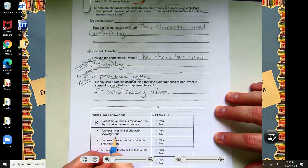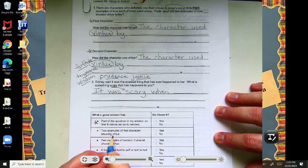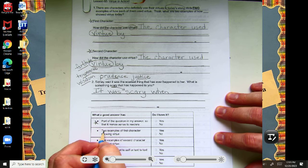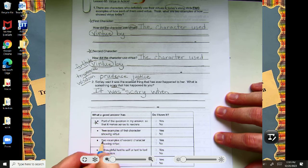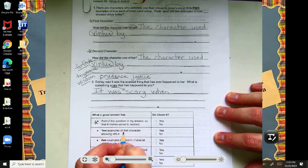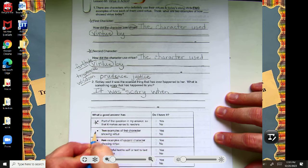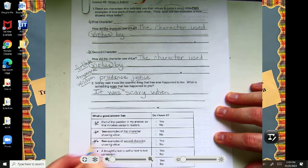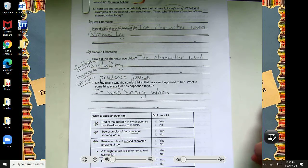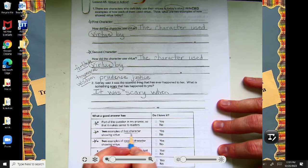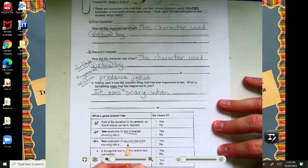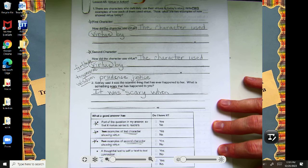Two examples of the first character showing... So this should be, right, an example of the first character and an example of the second character. So it's a total of two. So how did the first character show virtue? And then what was the way the second character showed virtue?